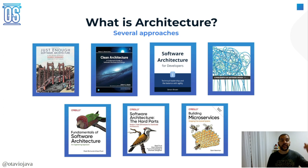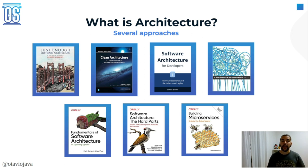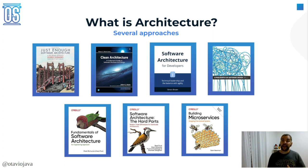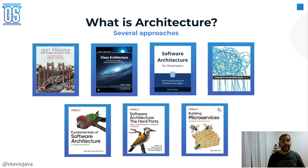I usually recommend these when I do mentorship or consulting. Just Enough Software Architecture covers risk-driven approaches inside an organization. Clean Architecture has become the more popular one. Software Architecture for Developers, where Simon Brown mentions the C4 model. And A Philosophy of Software Design. The Fundamentals of Software Architecture has my favorite part — the laws: everything has a trade-off, there is no perfect solution inside software architecture, and the 'why' is more important than the 'how'.